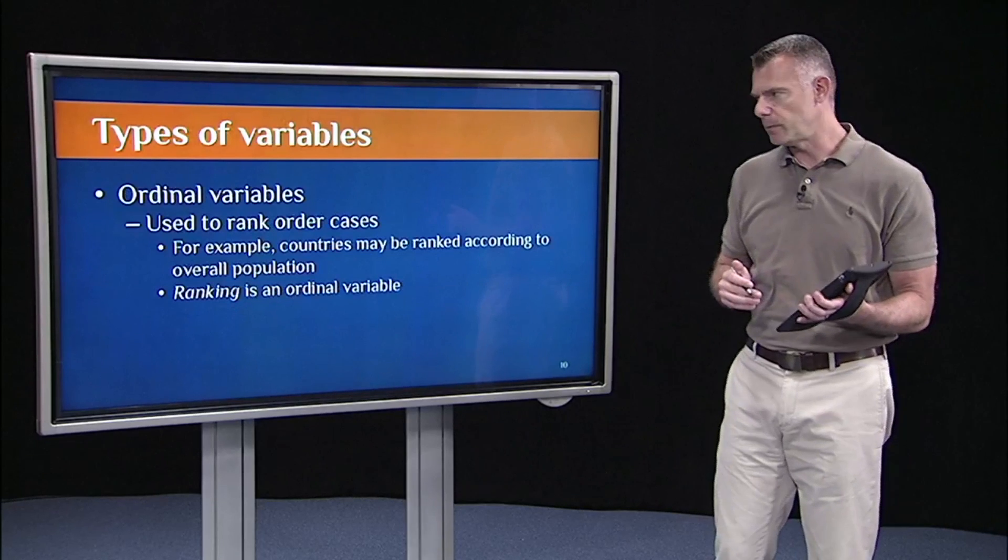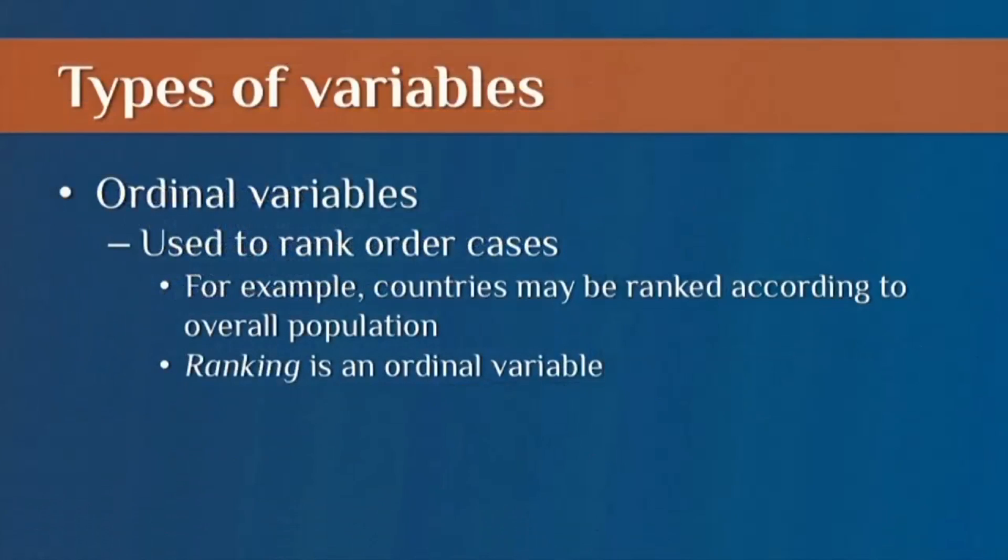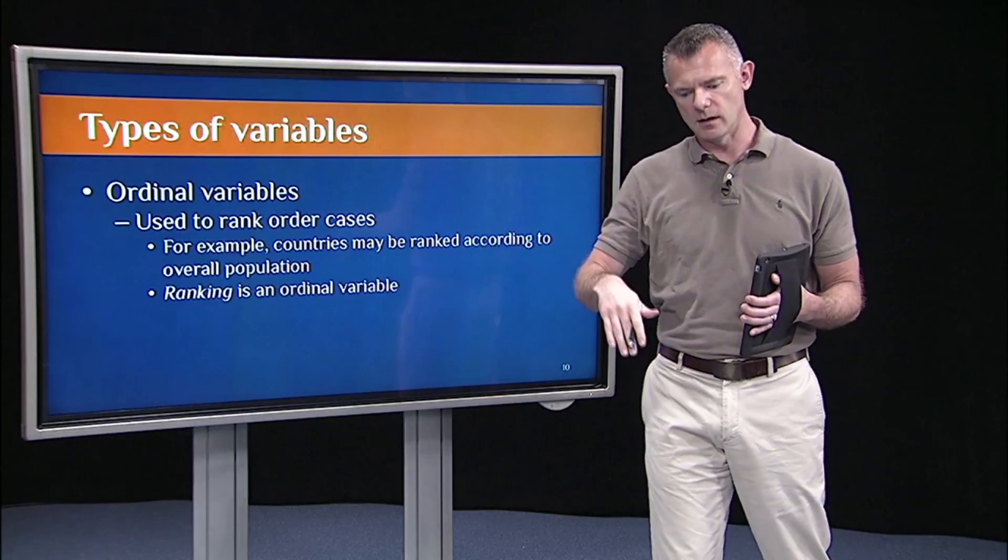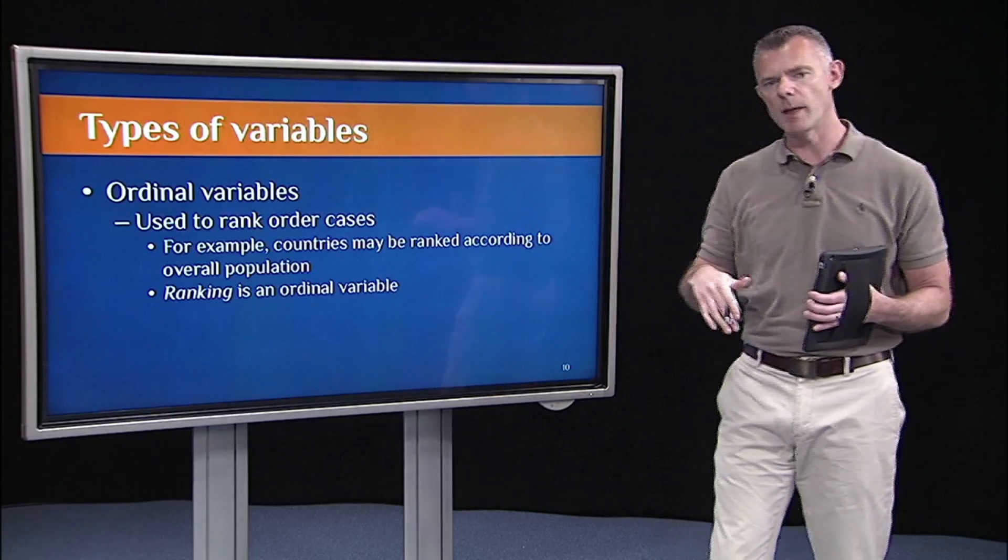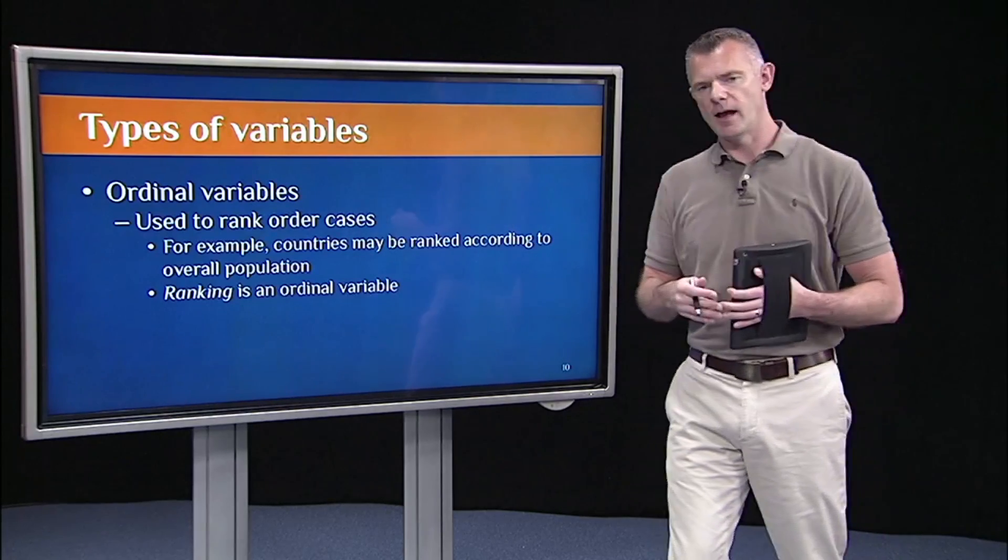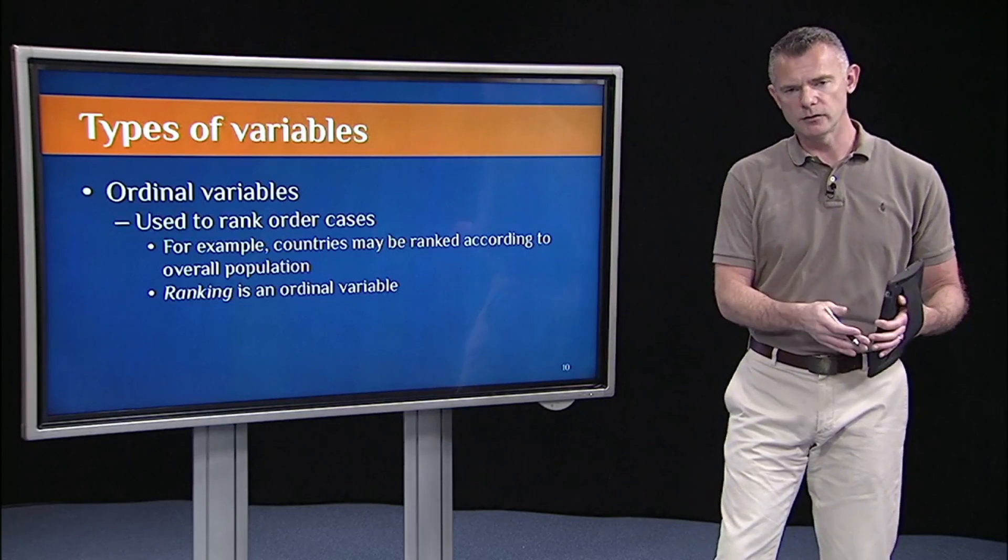The next type of variable is an ordinal variable. Ordinal variables are used to rank order cases in a data structure. I might rank the countries according to population. So some countries like China, India, have much larger populations than smaller countries,